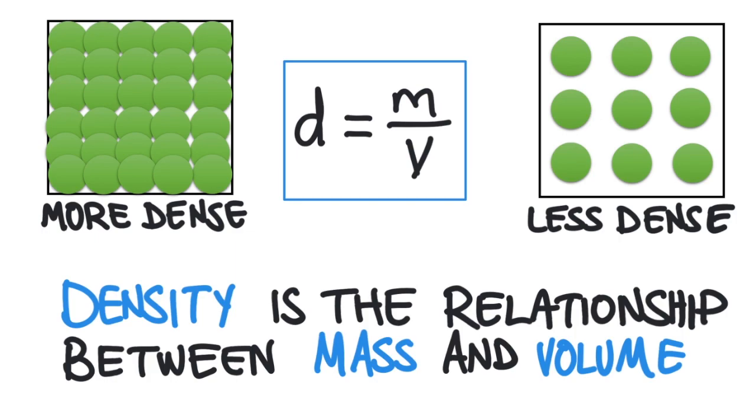There are three variables in this equation. If we know two of them, we can always solve for the third. In this case, we're going to solve for the volume.